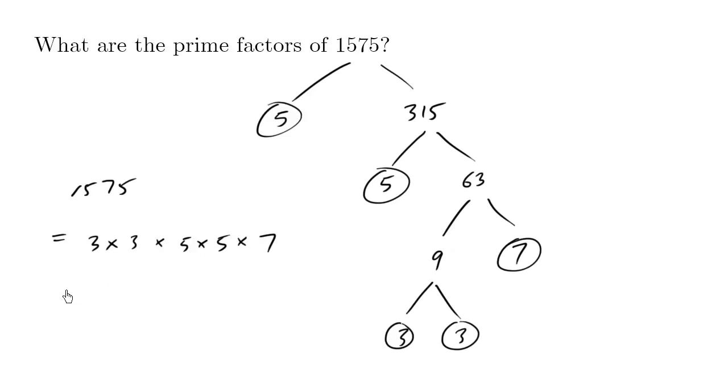The prime factorization might also be written as 3 to the exponent 2, because there's 2 of them multiplied, times 5 squared times 7.